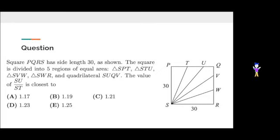Square PQRS has side length 30 as shown. The square is divided into five regions of equal area: SPT, STU, SVW, SWR, and quadrilateral SUQV. The value of SU divided by ST is closest to A: 1.17, D: 1.23, B: 1.19, C: 1.21, or E: 1.25.